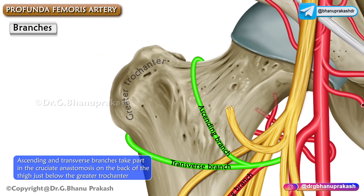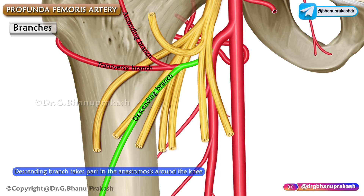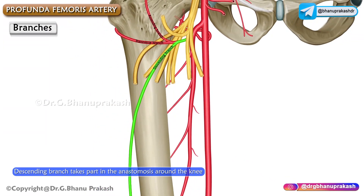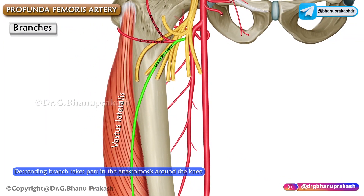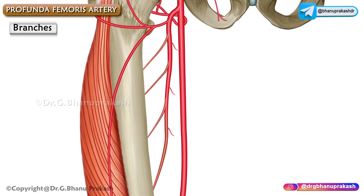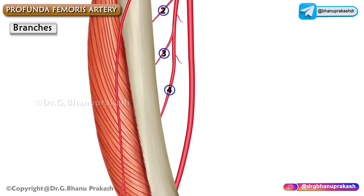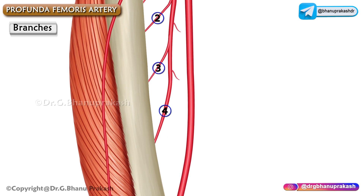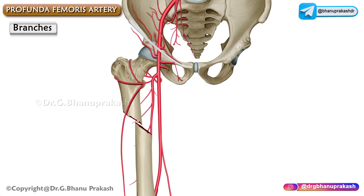The descending branch runs down along the anterior border of the vastus lateralis and takes part in the anastomosis around the knee. The perforating arteries are four in number, numbered from above downwards as first, second, third, and fourth, with the fourth being the continuation of the profunda femoris artery itself.